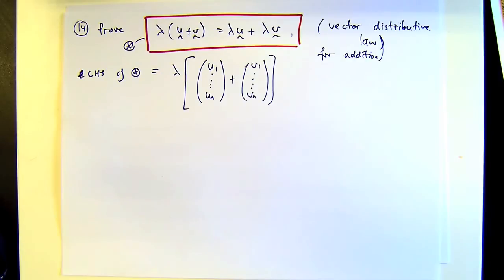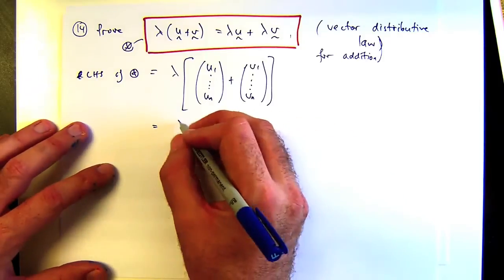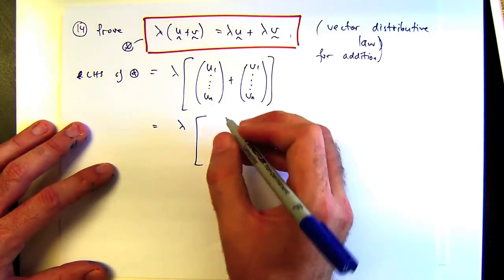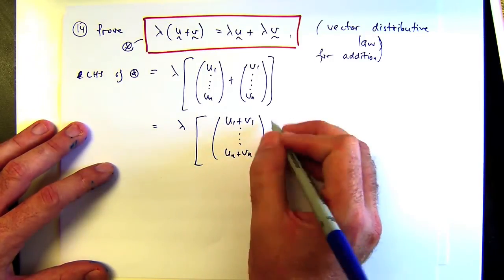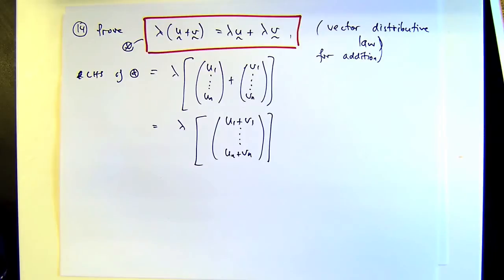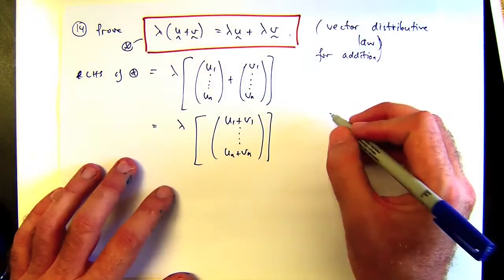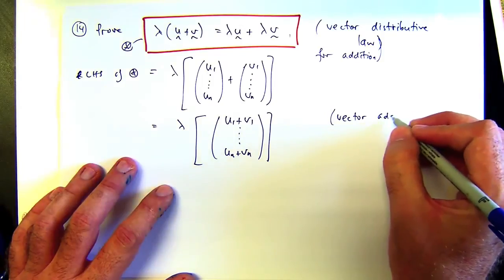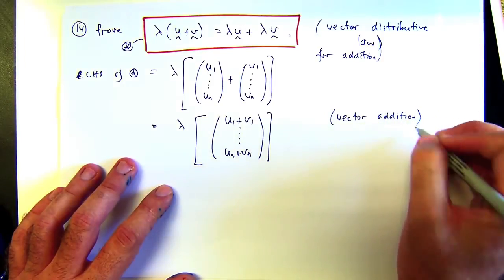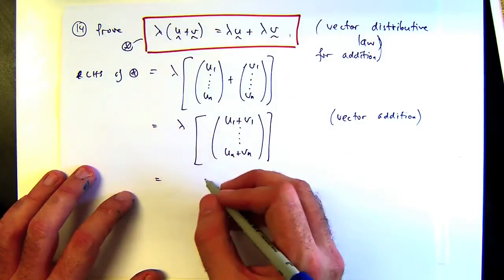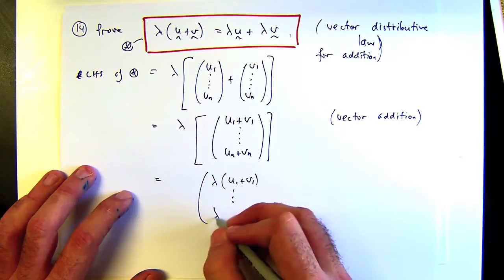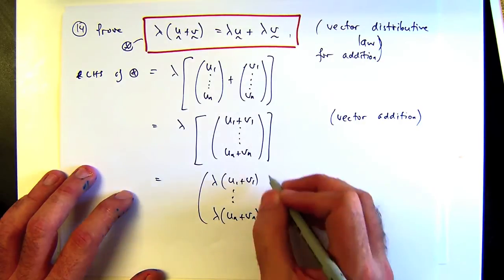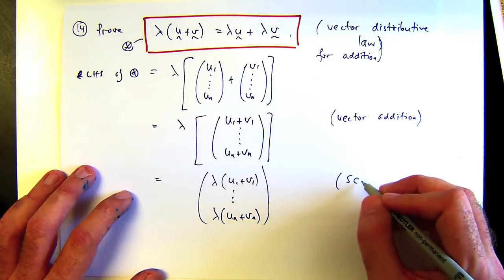With the addition of vectors, I just add the components. Then I can use the scalar multiplication idea to work in a component-wise fashion. So I bring that into here. That's scalar multiplication.